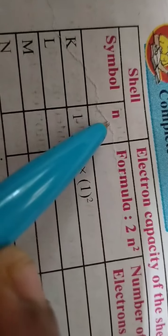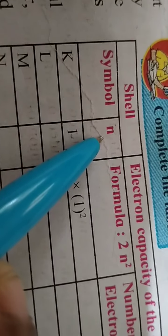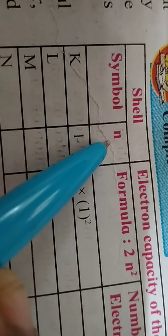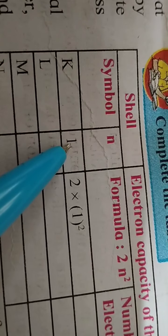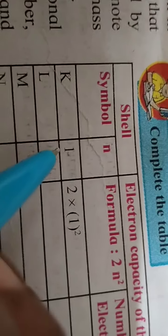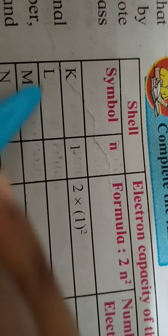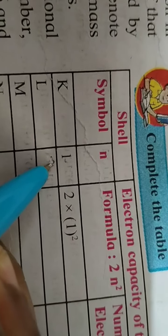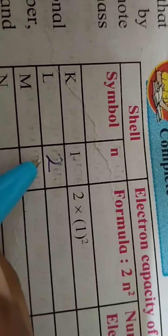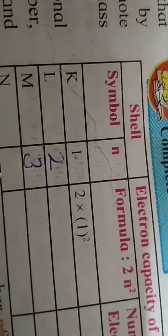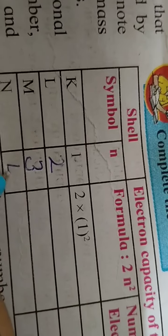Now let's see: K has ordinal number N equals 1, L has ordinal number N equals 2, M has 3, and N has 4.